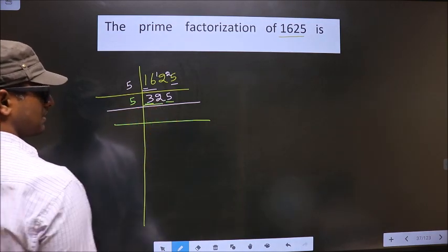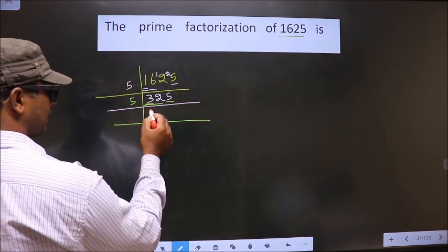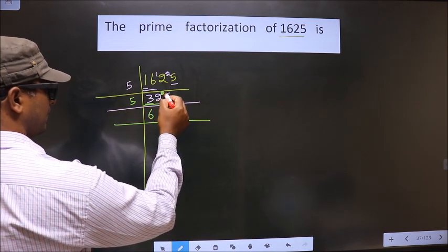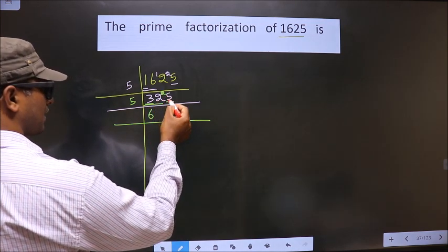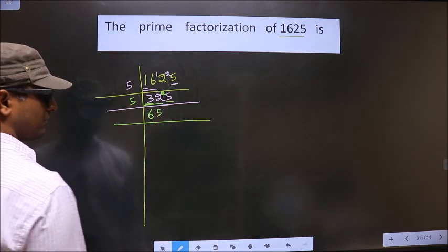Closer to 32 in 5 table is 5 times 6 is 30. 32 minus 30 is 2, 2 carried forward making it 25. When do you get 25 in 5 table? 5 times 5 is 25.